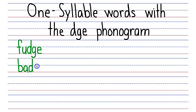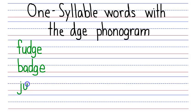Say it fast: badge. Next word is judge. Judge has a J, then a U that makes the short U sound, and a DGE that says J. J, U, J — judged. Say it fast: judge.